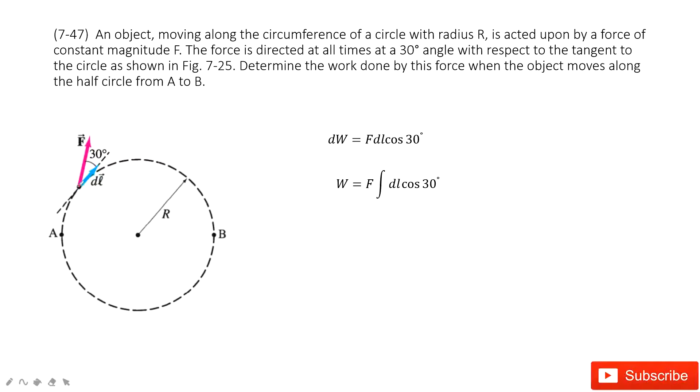You can see there is a force, and it has an angle of 30 degrees with dL. dL is the tangent of this circle. And this work from the A position moves to the B position. We need to determine the work done by this force. This object moves half a circle from A to B.